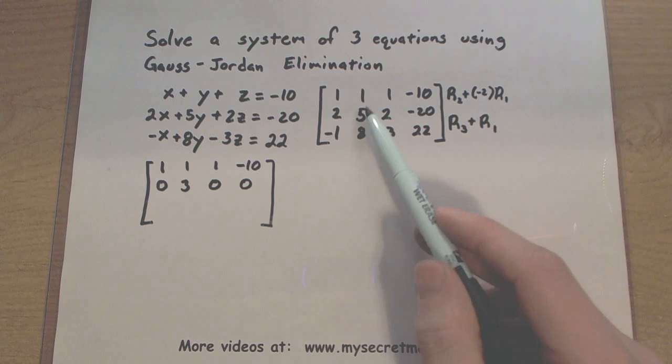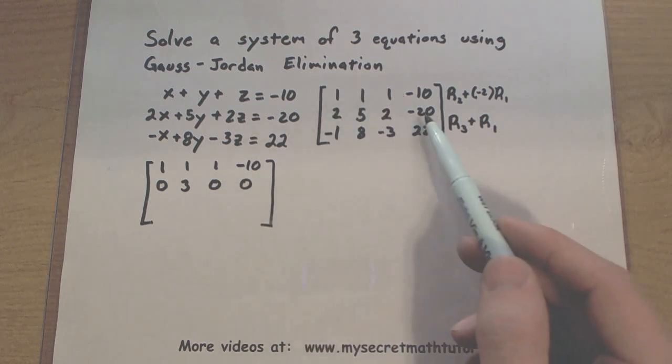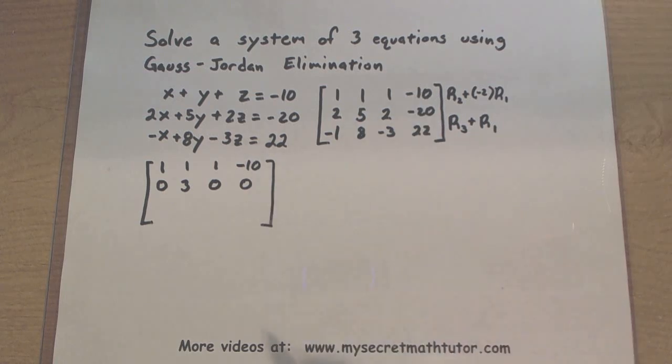Let's double check that. So 5 minus 2, good. 2 minus 2, yep. Negative 20 plus 20, 0. Okay, everything's checking out.